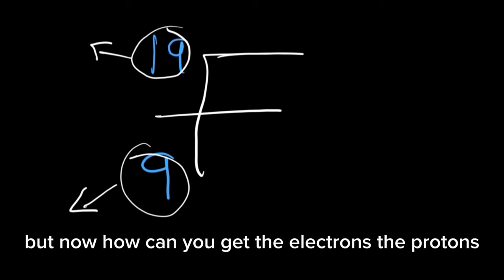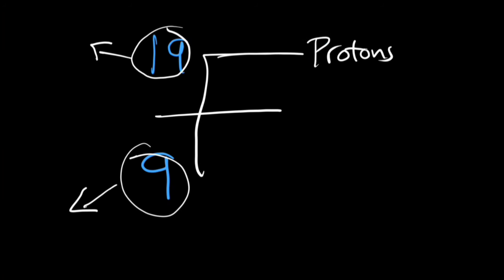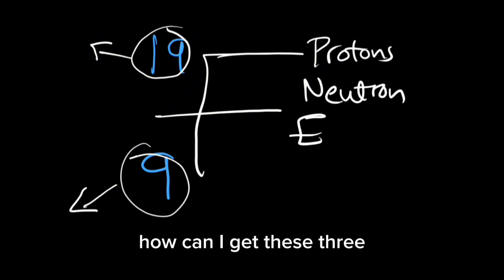But now, how can we get the electrons, the protons, and the neutrons? How can we get these three?